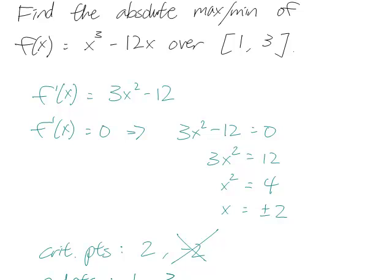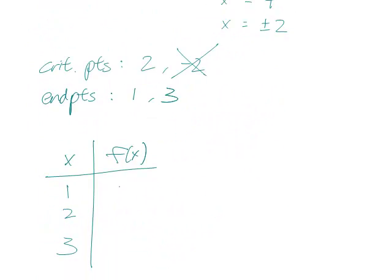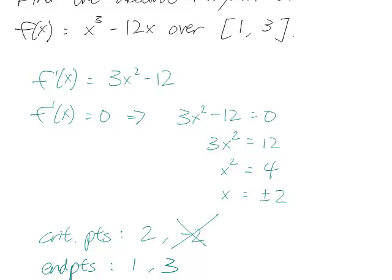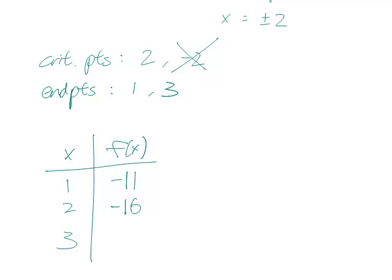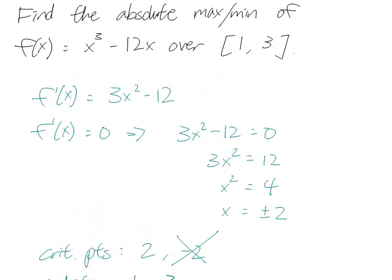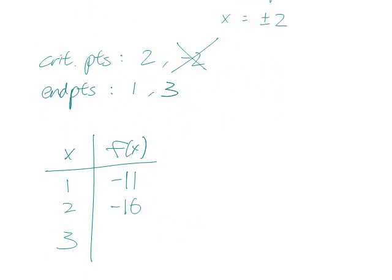When you plug 1 in, that's 1 minus 12, or minus 11. When you plug 2 in, 2 cubed is 8 minus 24, so that would be minus 16. And then when you plug 3 in, that's 3 cubed, or 27 minus 12 times 3, that's minus 36. So 27 minus 36 is minus 9.